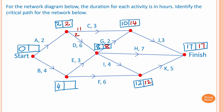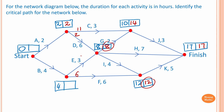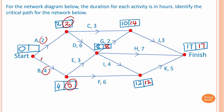To work out the latest starting time for F and E: twelve minus six is six, and eight minus three is five. The smallest value is five. Then five minus four is one, and two minus two is zero — zero is the smallest value. We now have the earliest and latest starting times for each activity.